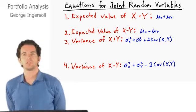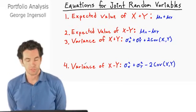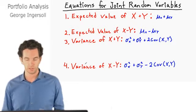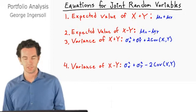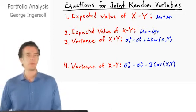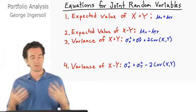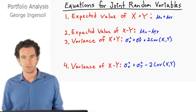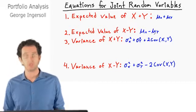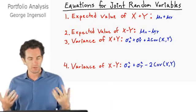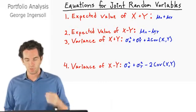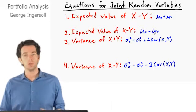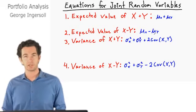The expected value of the difference between two random variables is just a subtraction — it's just expected value of X minus expected value of Y. It gets a little more complicated when we start talking about the variance of two portfolios, from which you can derive the standard deviation. The variance of X plus Y is going to be the variance of X plus the variance of Y plus two times the covariance of X and Y.